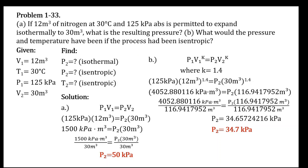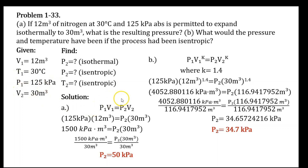In an isothermal process, the temperature of the system remains the same, so the change in temperature is always zero — temperature is constant. Since the initial volume, final volume, and initial pressure are all given, we can use the ideal gas law equation, specifically Boyle's law.